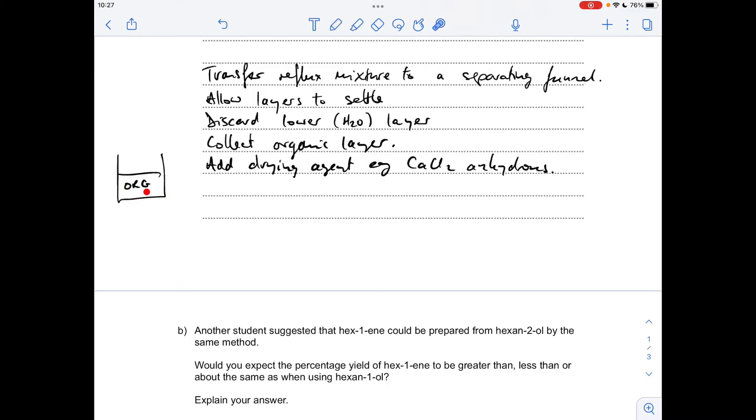Remember there's two organic chemicals in here, there's hex-1-ene and hex-1-ol, they've got different boiling points. The hex-1-ene, the substance we're trying to make, has got the lowest boiling point, 63 degrees C, so we're going to re-distill this mixture and collect the fraction that boils off at 63 degrees C.